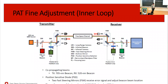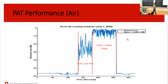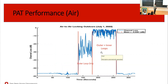Both control loops together give us good coupling efficiency. In ground tests, with both loops off there's no coupling; the outer loop alone begins coupling signal; with both loops on, coupling is efficient and stable. In the air, the signal is choppier, but with both loops active we achieve an average of 30% coupling efficiency onto our benches — sufficient for our experiment.